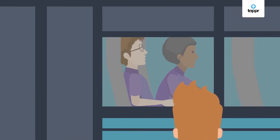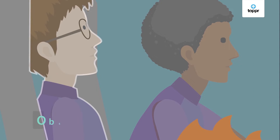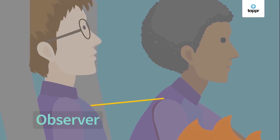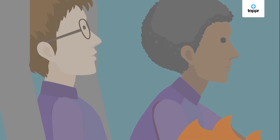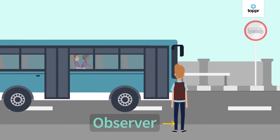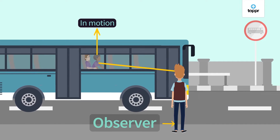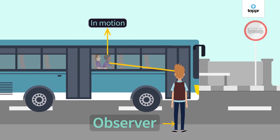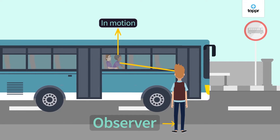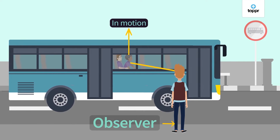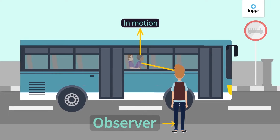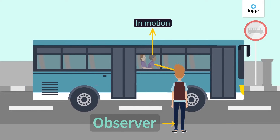Let's understand this in detail. Inside the bus, you are the observer who is judging the state of motion. Since the person is not changing position with respect to you, he appears to be at rest for you. But when an observer is on the ground, the person sitting on the bus is changing his or her position with respect to this observer, so the same person appears to be in motion.